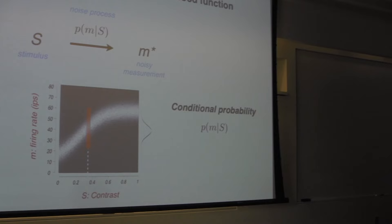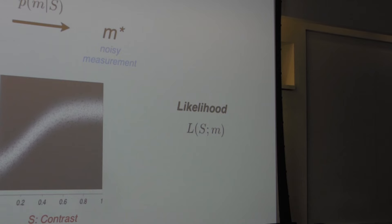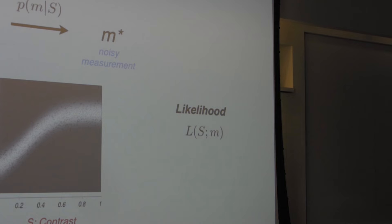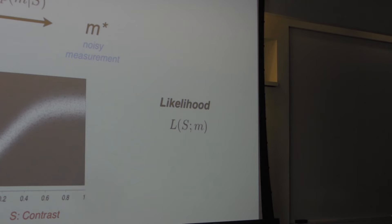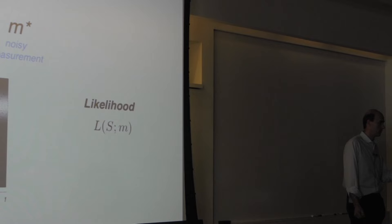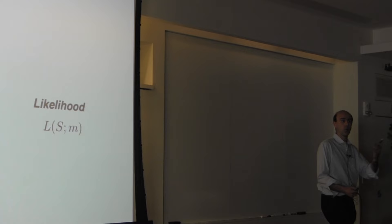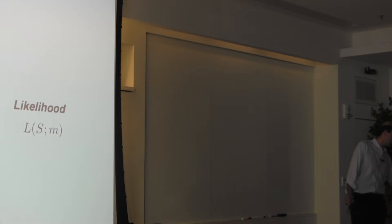Now I want to introduce the concept of likelihood, which is a related but conceptually different way of thinking about this graph. The likelihood is what the person who wants to make the inference needs to think about. The likelihood is a function of the stimulus. We imagine we have a particular measurement and want to know what are the likely stimuli that could have given rise to that firing rate. It kind of reverses the problem: the conditional probability says what are the measurements given the stimulus; the likelihood says what are the likely stimuli given the measurement.